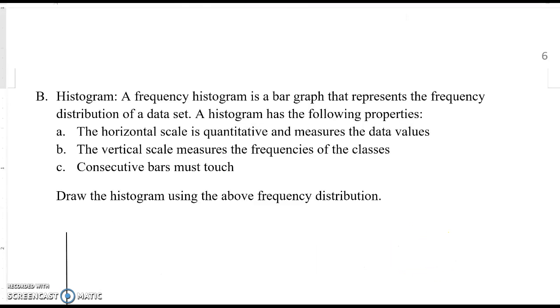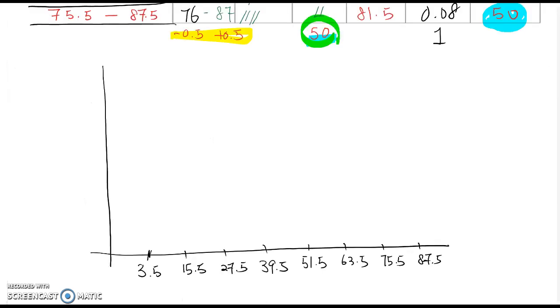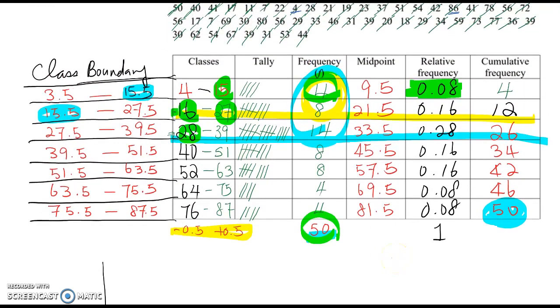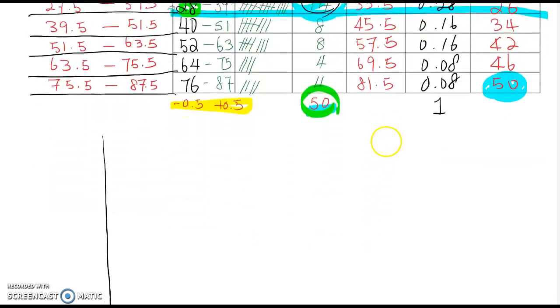And then the second property, the vertical scale measures the frequency of the classes. Therefore, this one become frequency value. So go to frequency table. Now you need to look for which one is the maximum frequency value. When I see that, the 14 is maximum frequency value. So I am going to make scale from 0 to 14.